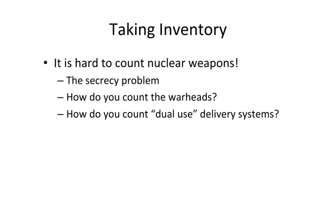The second challenge is how you count warheads and weapon systems. Do you count only those warheads that are actively deployed on a delivery system and ready for use? Or do you also count warheads that are inactive — stored separately from the delivery system, in reserve, retired, or waiting dismantlement? For delivery systems, the big counting problem is that many systems are dual-use, meaning they can be used to deliver both conventional and nuclear payloads, which makes it really hard to know how many of any given type ought to be counted as a nuclear delivery system.